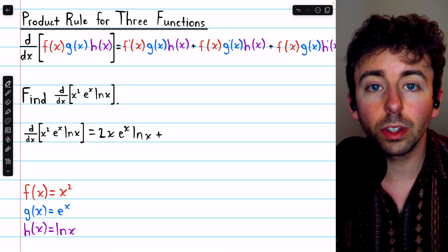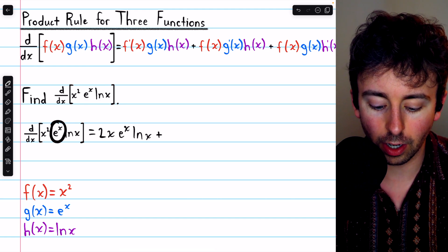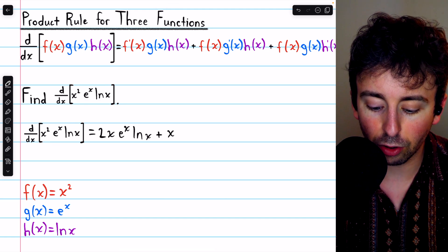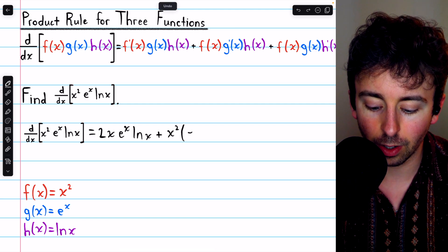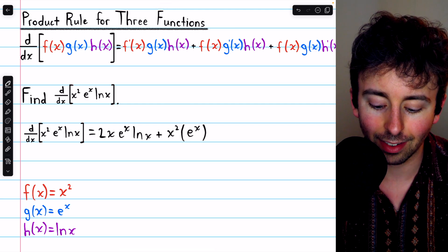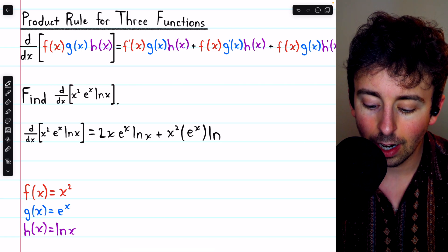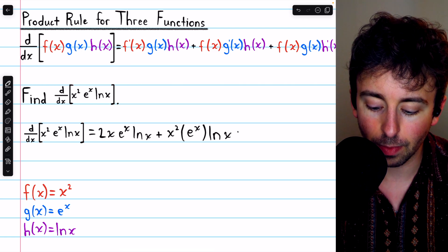Then in the second term, we'll take the derivative of the second function. So now the first function, x squared, is going to be unchanged. We're going to take the derivative of the second function. Of course, the derivative of e to the x happens to be e to the x. And then multiply by the third function, ln x.